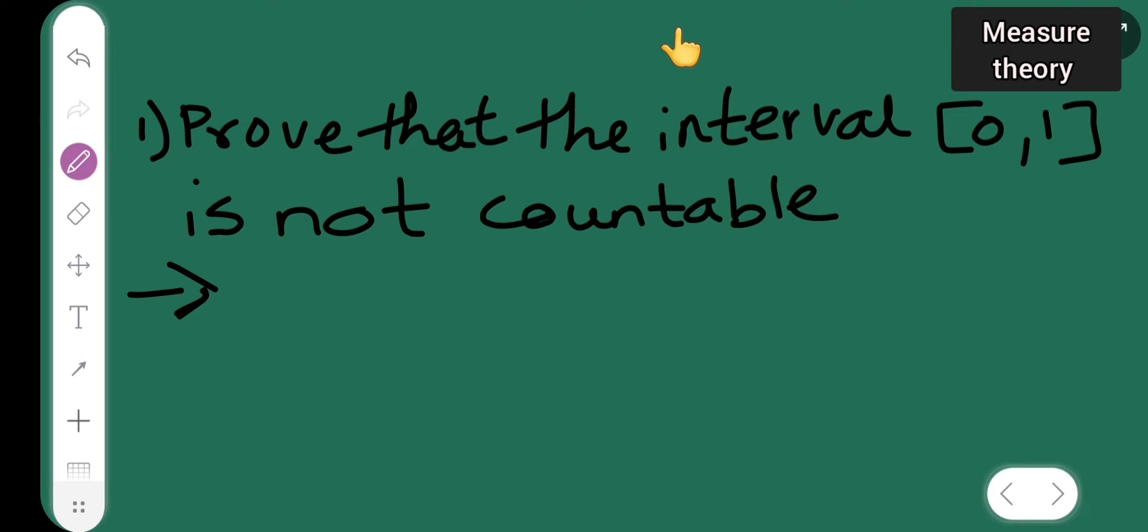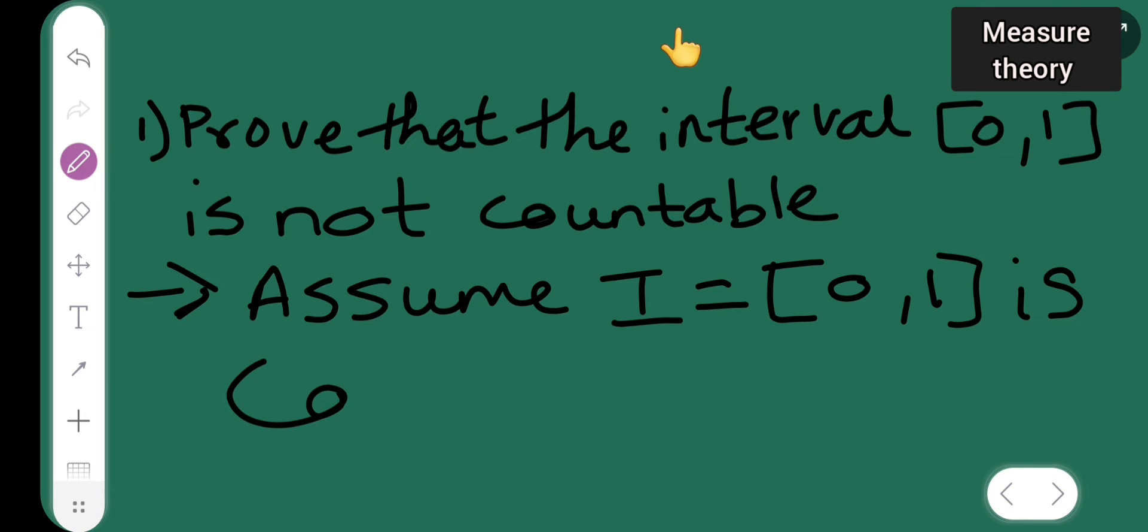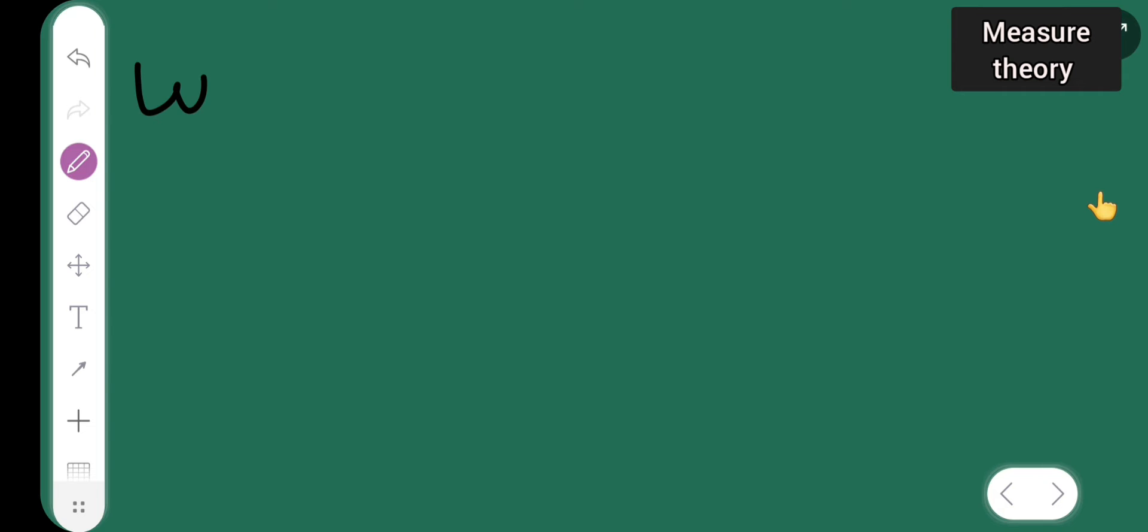This proof is by contradiction. First, we assume that I = [0,1] is countable. So I have to assume that this interval is countable. We know that...